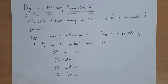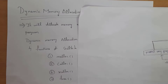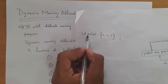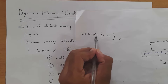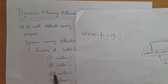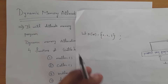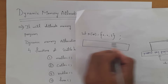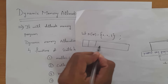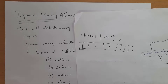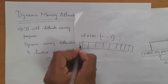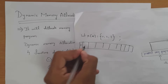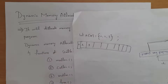Hi guys, welcome to my channel. In this video I will explain dynamic memory allocation in C. Normally we initialize values like this. If you consider this array example, I given size as 10 — 'a[10] = 1, 2, 3'. I given size as 10 but I given only three values. So whenever I declare like this it will create 10 memory locations, total 10 blocks, and 1 is stored in first block, 2 in second, and 3 in third block.